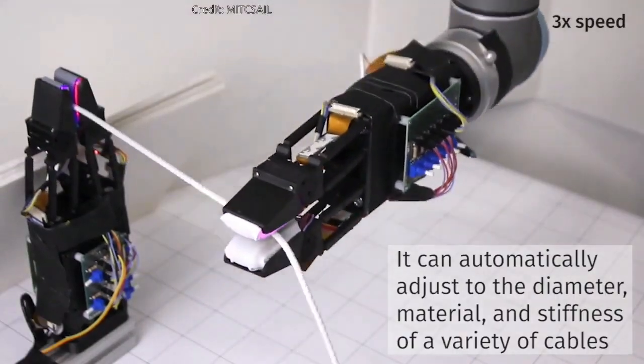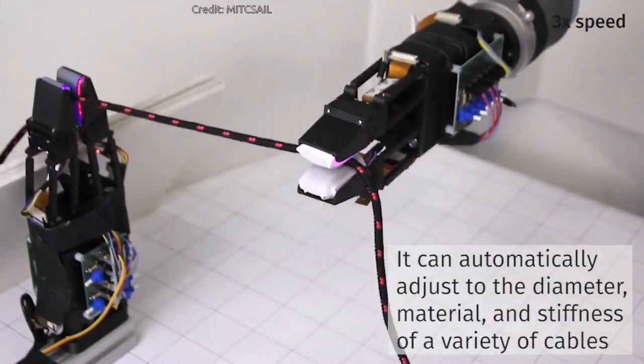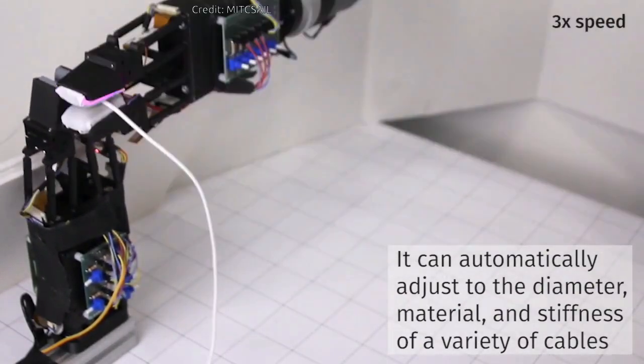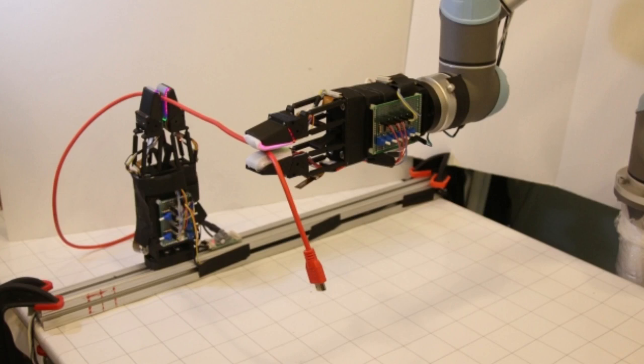On the tips of the fingers are vision-based GelSight sensors, built from soft rubber with embedded cameras. The gripper is mounted on a robot arm, which can move as part of the control system.